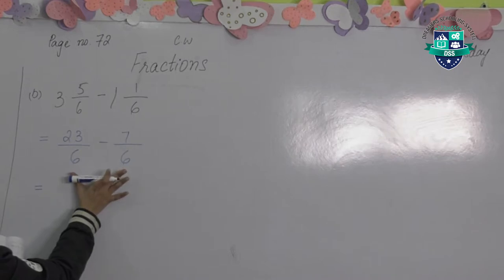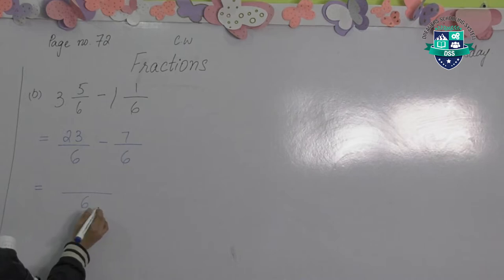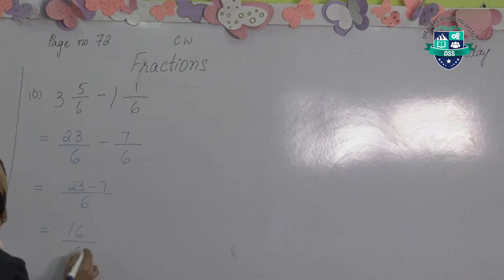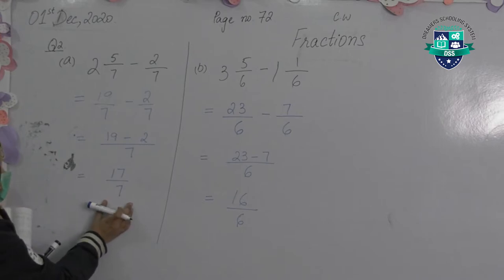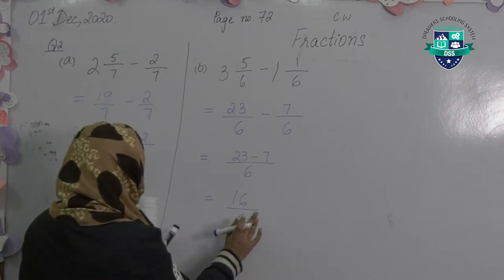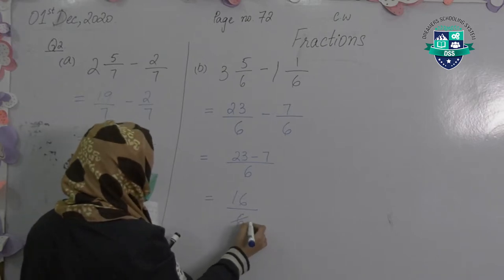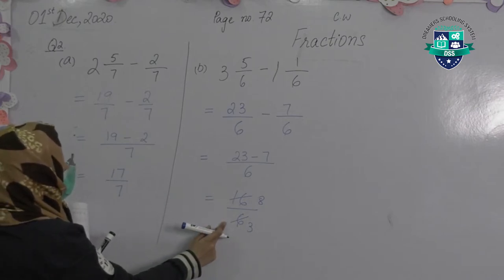The denominator is the same so we'll keep one denominator and subtract the numerators. 23 minus 7 is equal to 16 by 6. We have to write it in the simplest form. This can be simplified by the table of 2: 2 eights are 16 and 2 threes are 6, so the values will go on the table of 2. The answer is 8 by 3.